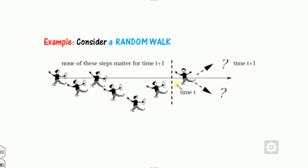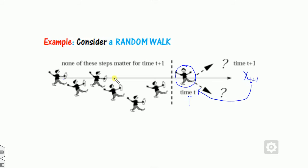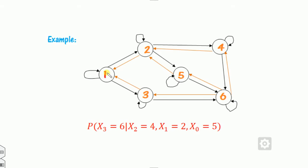A simple example is a random walk: a person moves in a zigzag motion. After a certain time t, the person can move in this direction or that direction. The movement at time t+1 depends totally only on the position at time t — it does not depend on positions at t−1, t−2, or the initial position.